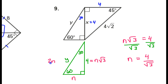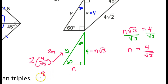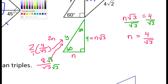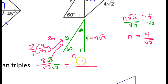We're looking for y. y is going to equal 2 times n, so that's going to be 2 times 4 over radical 3 — that'll be 8 over radical 3. Usually we want to rationalize the denominator, so we multiply the numerator and denominator by radical 3. That's going to give us 8 radical 3 over 3. So that is the value of y.